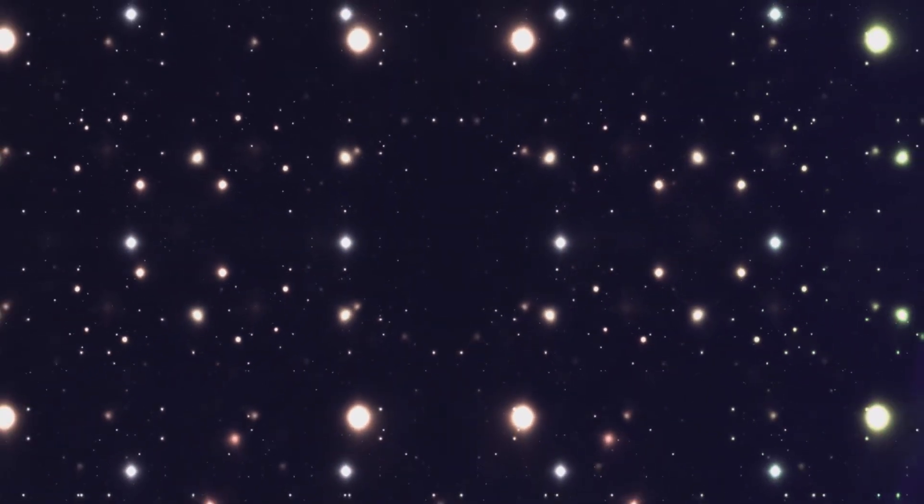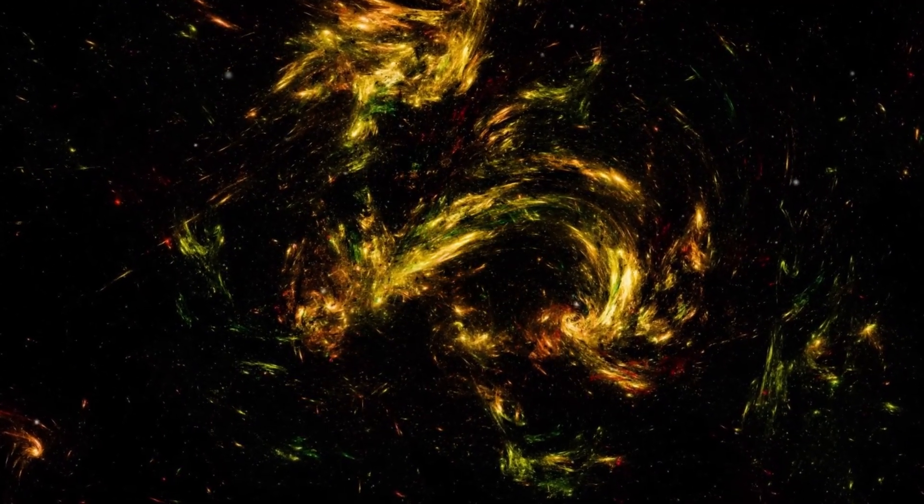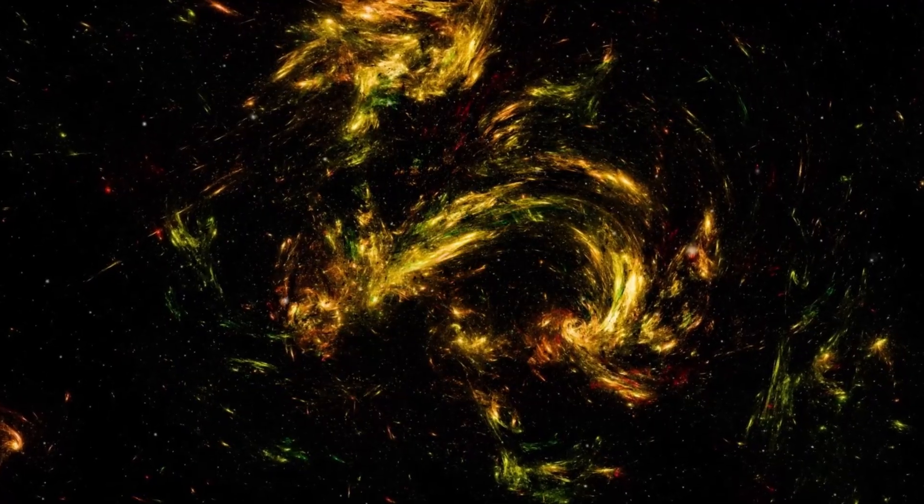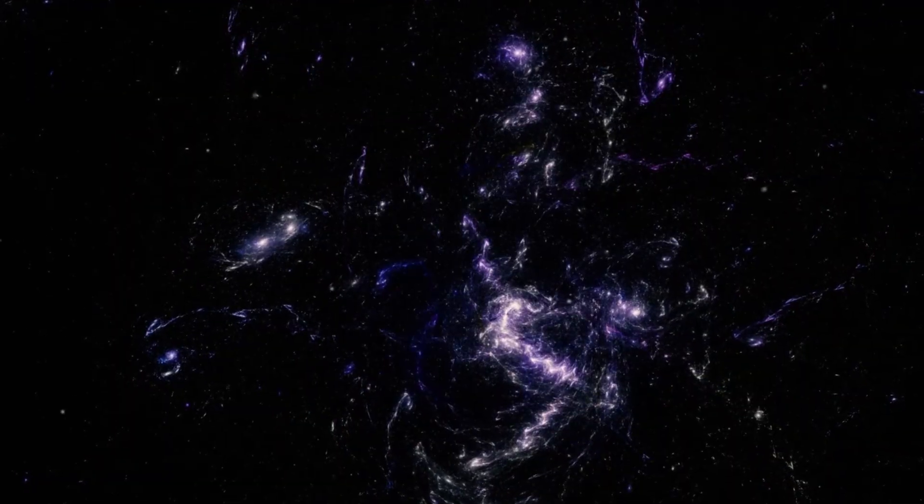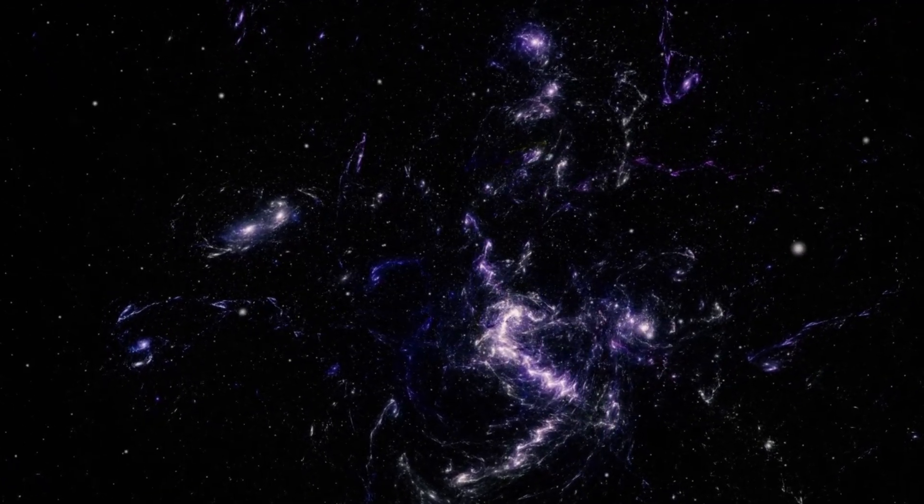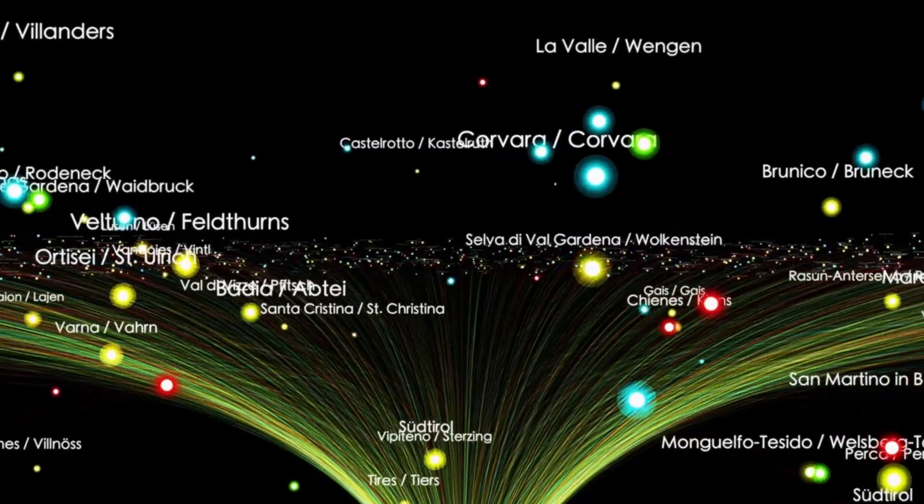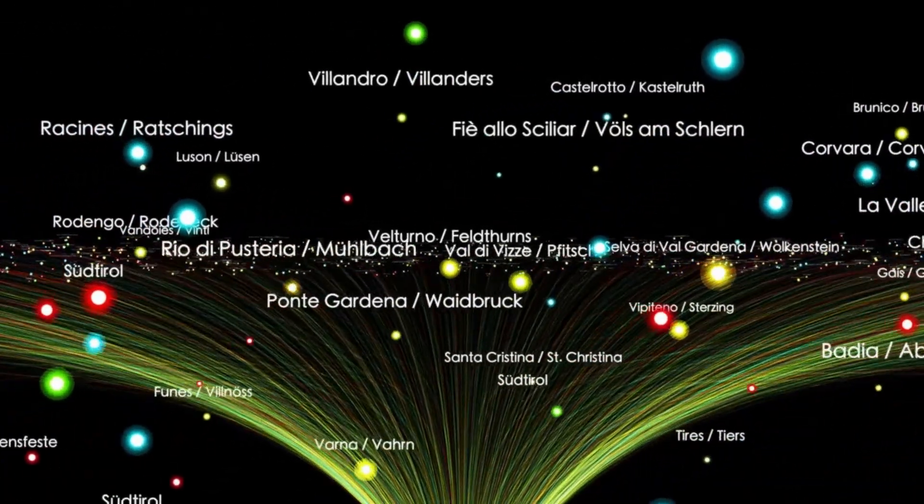Our nearest neighboring star, Alpha Centauri, is 4.3 light-years away, which means that if we were to travel at the speed of light, it would still take us 4.3 years to get there. Now imagine the time it would take to reach Alpha Centauri at the speed of the Voyager probe, 38,000 miles per hour. It would take a staggering 70,000 years. This highlights the immensity of the distances involved in exploring the cosmos.